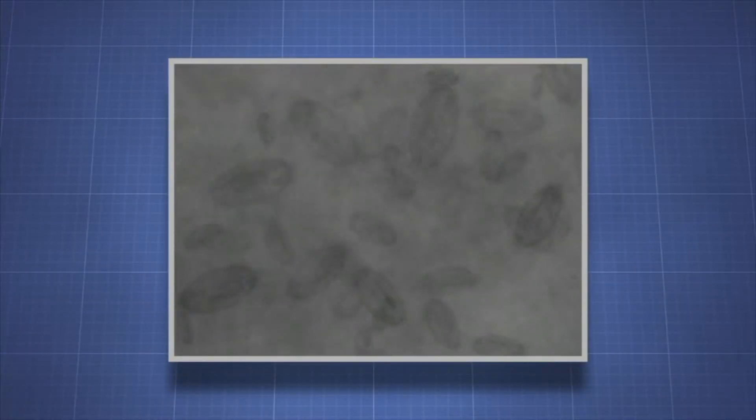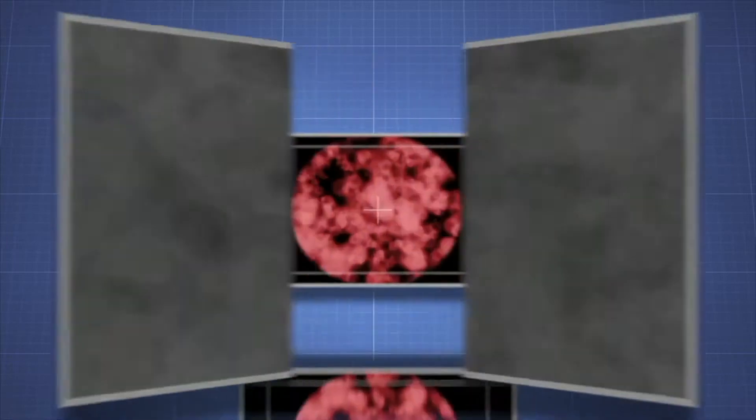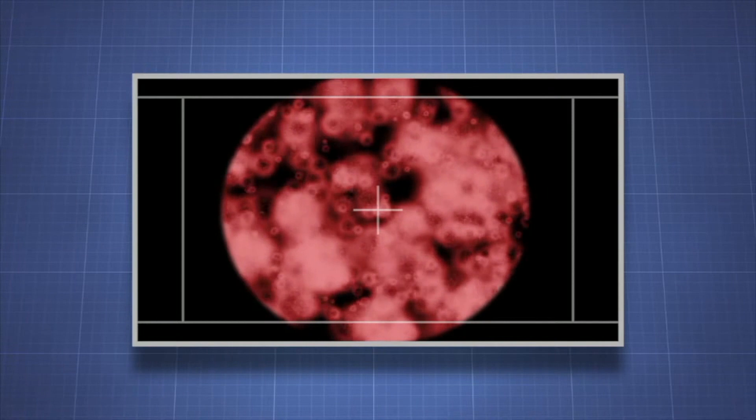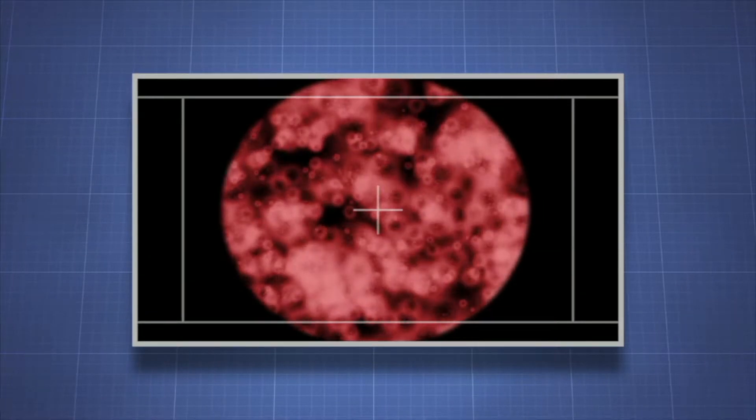If you looked, you'd find bacteria on every object around you. One reason bacteria are so ubiquitous is that they multiply very rapidly. How do they multiply so quickly?